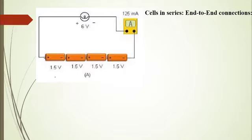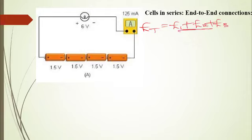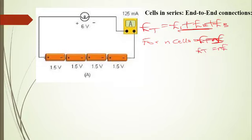Here is a more realistic diagrammatical representation of cells connected in series. When cells are connected in series, you find the sum of each cell's EMF together: EMF1 plus EMF2 plus EMF3. That gives the total EMF of the system. For n number of identical cells, the total EMF ET becomes n times E, written as ET = nE.